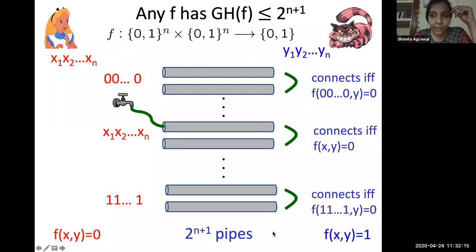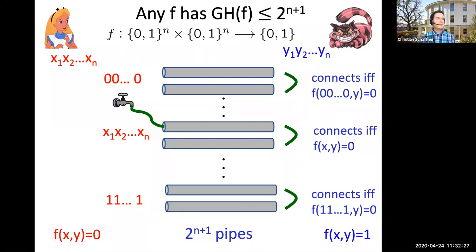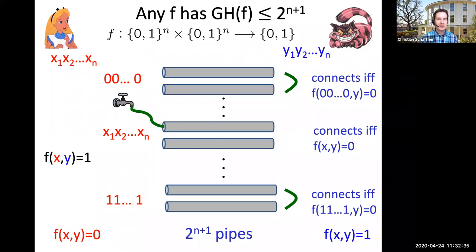For general bounds: the garden hose complexity of any f is at most 2^(n+1). The trivial strategy assigns a pair of pipes to each of Alice's possible inputs, so she connects water to the pair matching her input. Bob, knowing which pair the water came from, can determine Alice's input and compute f(x,y), connecting accordingly. This gives an upper bound of 2^(n+1) pipes for any boolean function. The connection to position-based crypto — why garden hose complexity is the right quantity to study — will be explained next.